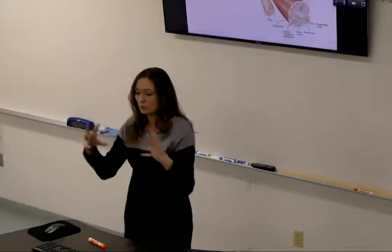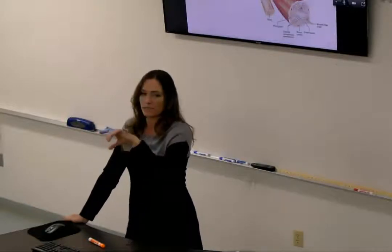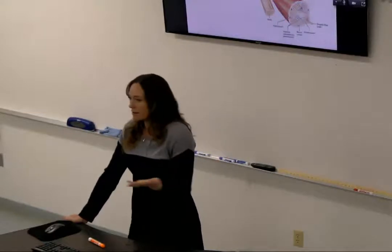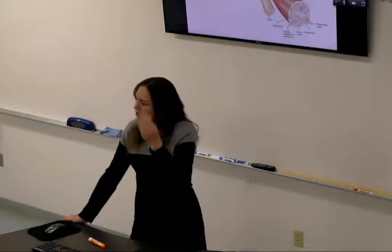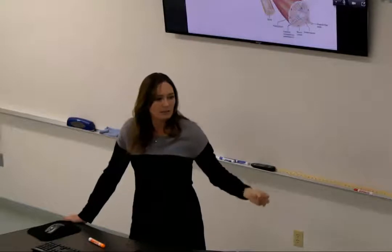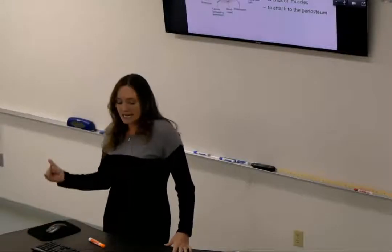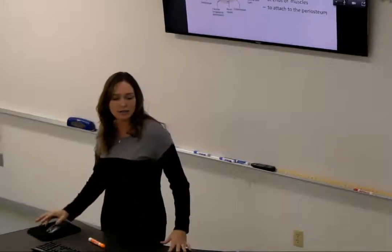Specifically for your test, you will likely see a diagram or description: what's wrapping around a single muscle cell — endomysium; what's wrapping around a group of muscle cells — perimysium; what's wrapping around the whole entire muscle — epimysium. A tendon is the muscle attachment to bone. It's the ends of the endomysium, perimysium, and epimysium coming together, attaching to the periosteum of the bone — that outer membrane of the bone.